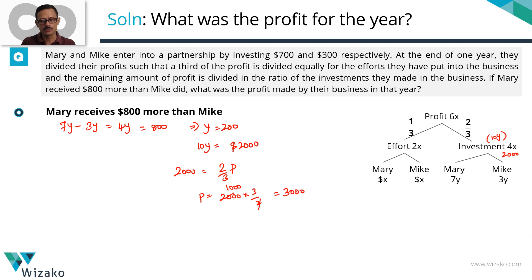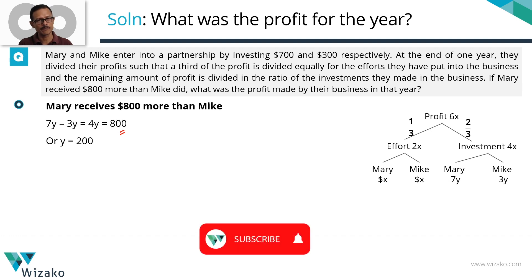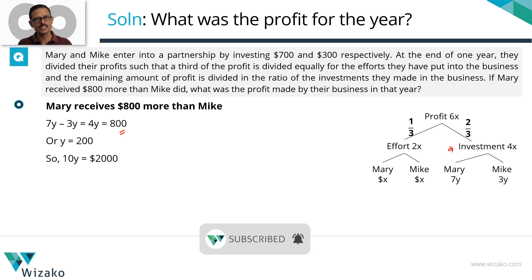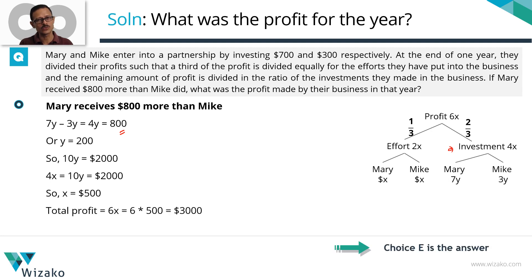So profit made by the business for the year is 3,000 dollars. To quickly summarize: the extra Mary receives is 800 dollars, which is 7y minus 3y equals 4y, so y equals 200. The total profit divided for investment is 10y equals 2,000 dollars. Since 2,000 dollars accounts for 4x, x equals 500, which means profit 6x equals 3,000 dollars. Choice E is the correct answer.